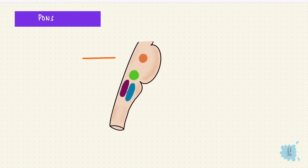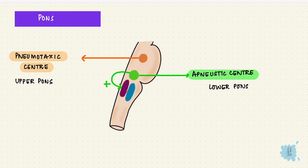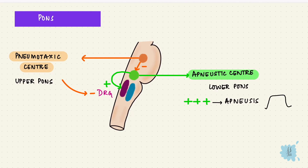Like the medulla, there are two groups of neurons in the pons: the pneumotaxic center and the apneustic center. The pneumotaxic center is in the upper pons and the apneustic center is in the lower pons. The apneustic center stimulates the inspiratory neurons of the dorsal respiratory group in the medulla, while the pneumotaxic center inhibits the apneustic center and switches off the inspiratory centers. Overstimulation of the apneustic center can result in apneuses, which is prolonged inspiratory gasps followed by brief expiratory movements.